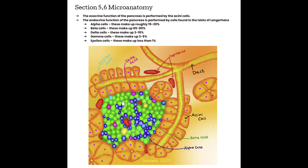Within the islet of Langerhans are five more types of cells: alpha cells represented by the blue, beta cells represented by the green, delta cells which are the pink ones, gamma cells which are the yellow ones, and lastly the epsilon cells which are the light blue ones.